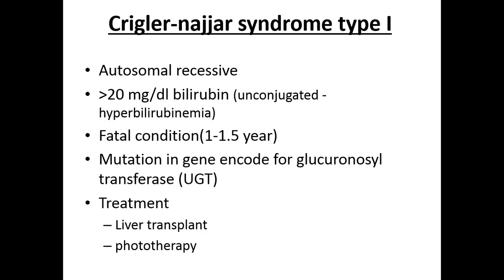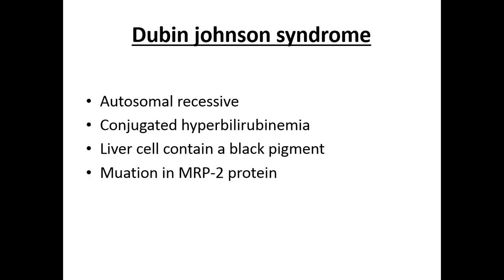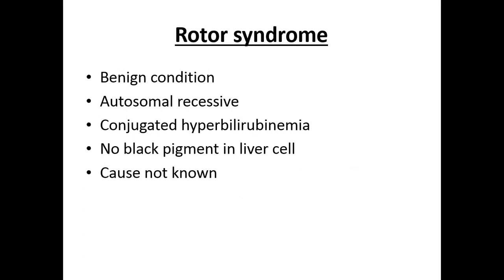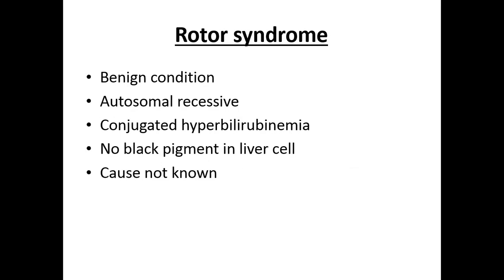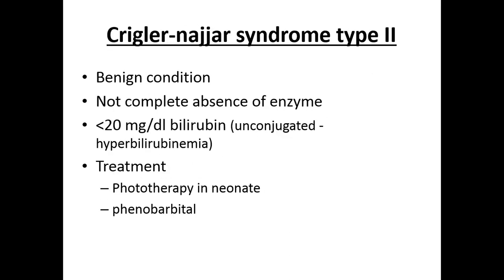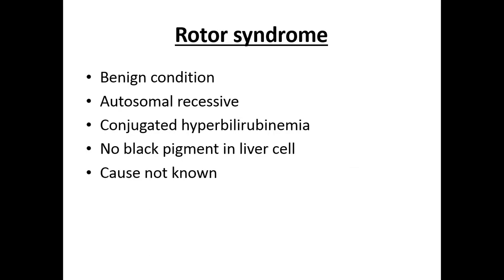Genetic disorders related to hyperbilirubinemia include mainly four: Crigler-Najjar syndrome type one, Crigler-Najjar syndrome type two, Gilbert syndrome, Dubin-Johnson syndrome, and Rotor syndrome. These can be divided into two groups: Crigler-Najjar and Gilbert form one group, Dubin-Johnson and Rotor form the other. In Crigler-Najjar and Gilbert syndrome, unconjugated hyperbilirubinemia is seen; in Dubin-Johnson and Rotor, conjugated hyperbilirubinemia is seen.